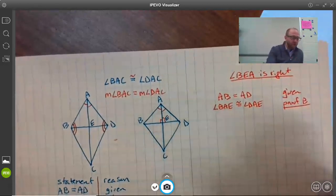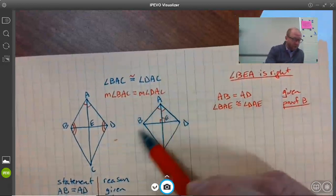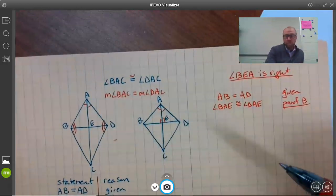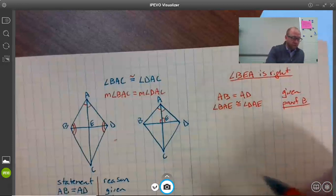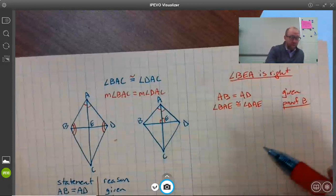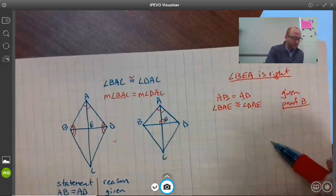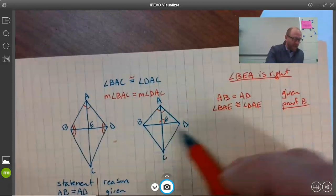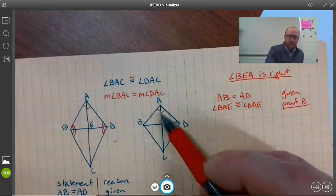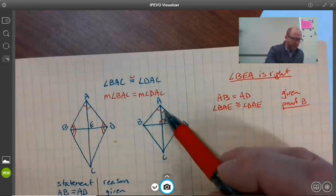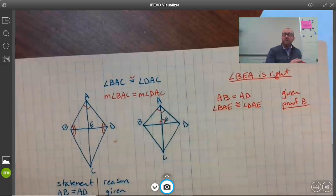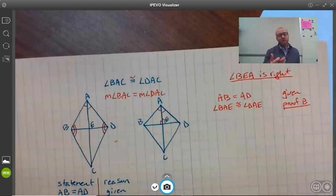Here's how we start to show the two triangles are congruent. First, AB and AD are the same—those are congruent, and that's given to us from the beginning. Then we have that angle BAE, that's right here, is congruent to angle DAE, that's right here, and that's from an earlier proof. You can take something you proved earlier and use it as new information in a new proof.